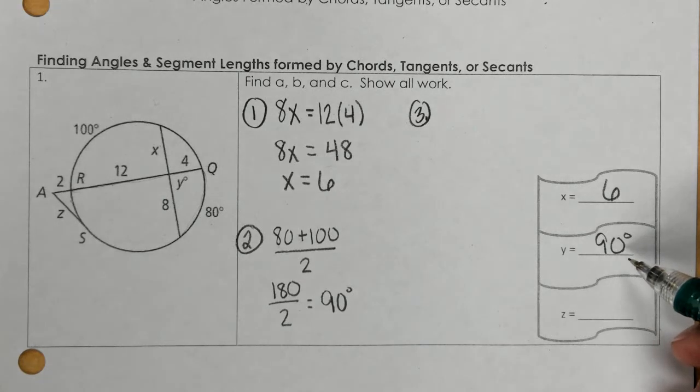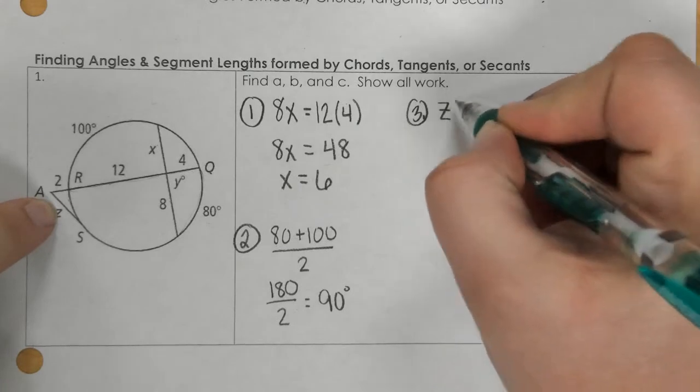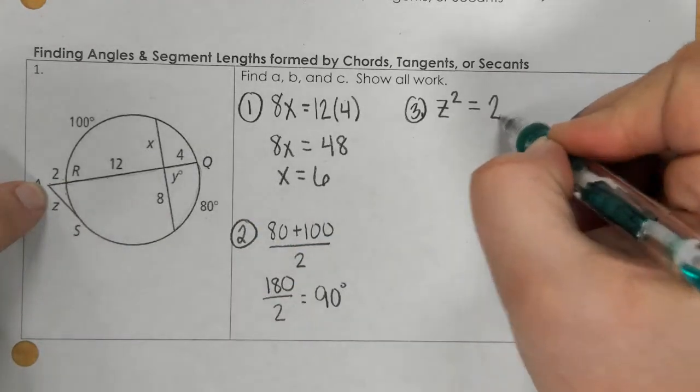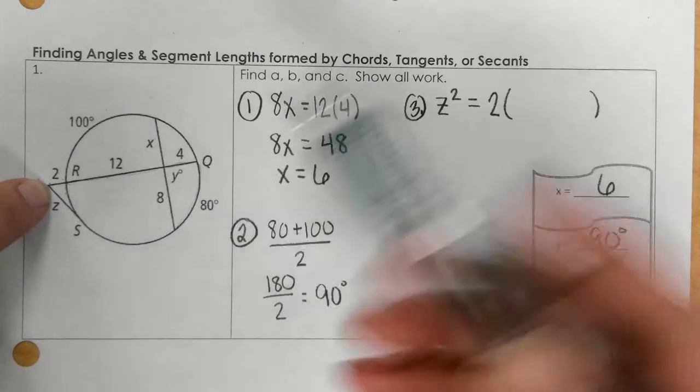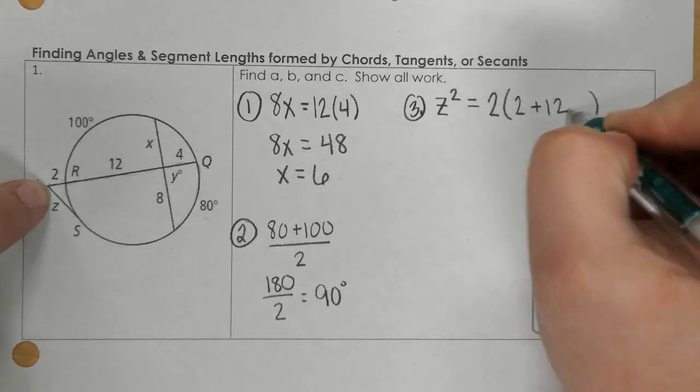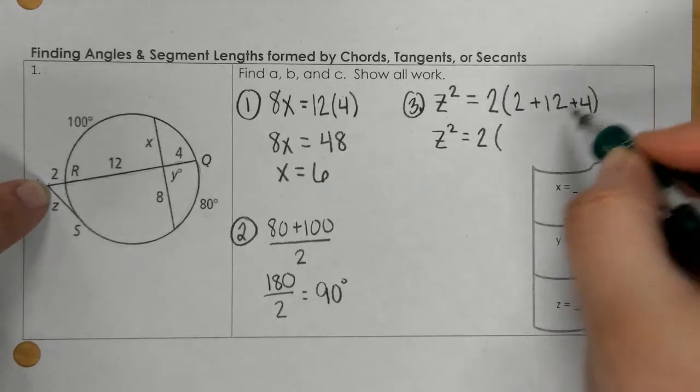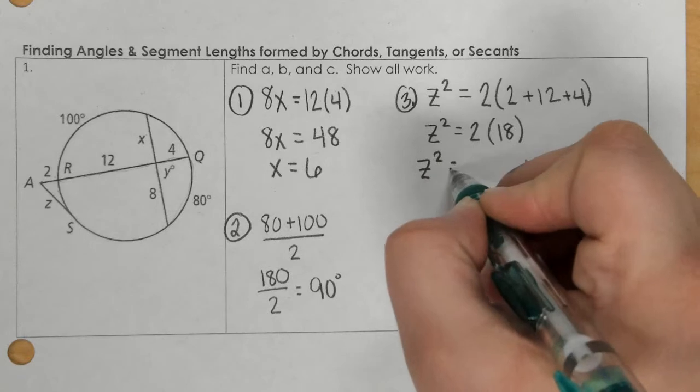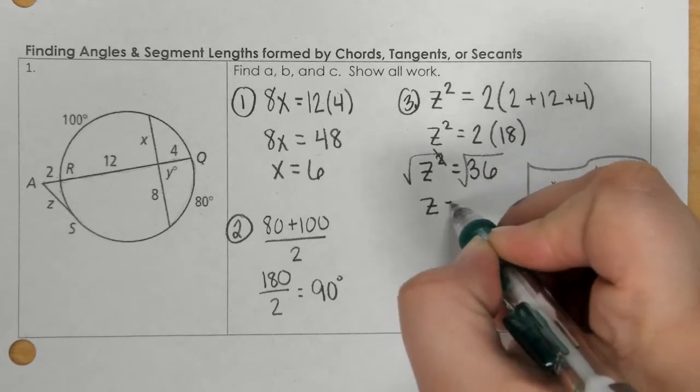Then for segment z, we do z times itself, so that would be z squared. And then you do the outside piece 2 times the sum of the whole length, so that would be 2 plus 12 plus 4. I get 18, and then 2 times 18 is 36. To get z by itself, we're just going to square root both sides and get 6.